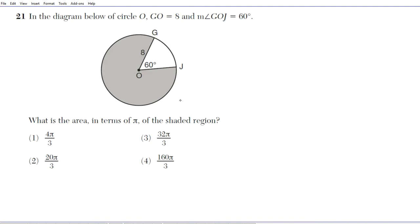So what we're looking at here is the area of this shaded region, which is known as a sector. A sector is a fraction of an entire circle. So let's go ahead and write down the formula for calculating the area of a sector. The formula is as follows.